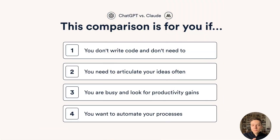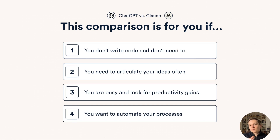Before we start, a little disclaimer. This comparison is going to be most relevant for those of you who don't write code or don't need to. If you need to articulate your ideas often — using LLMs to generate ideas, summarize content, or create content — then this comparison is relevant. If you're the kind of person who is busy, has a packed schedule and is looking for productivity gains or ways to save time, this comparison should resonate. And finally, if you're looking to automate your processes with AI, then you are at the right place.